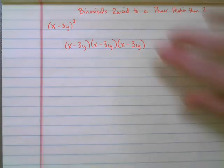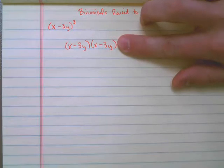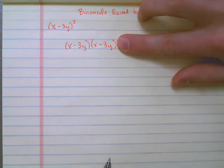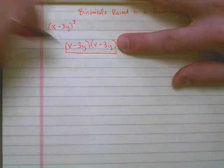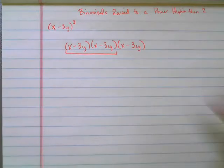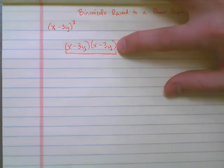If I only gave you two of these, then most people in Algebra 2 would be able to tell me that's just going to be FOIL. I'm going to use FOIL. So we're going to go ahead and combine the first two of these terms, and we're going to forget that this x minus 3y exists for just a second.